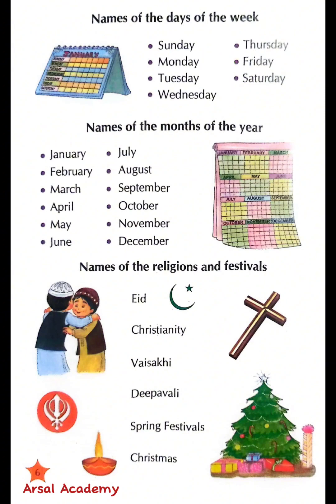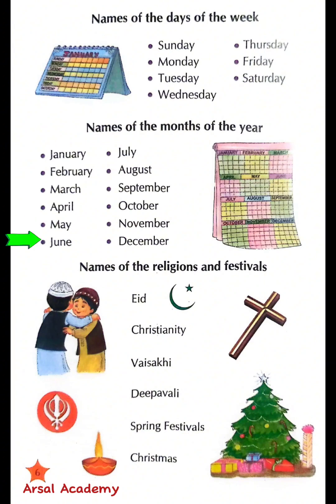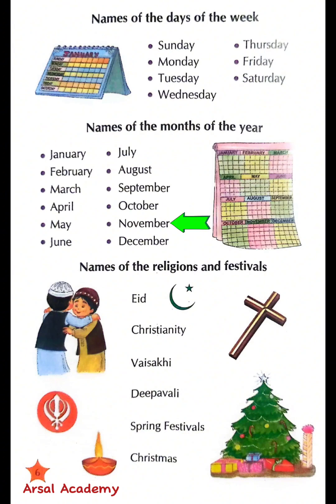Names of the months of the year: January, February, April, May, June, July, August, September, October, November, December.